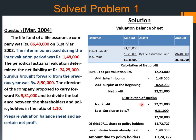Distribution of surplus: Net profit available is Rs 22,21,000. Less surplus to be carried forward to the next year — that is Rs 9,31,000. So the remaining profit is Rs 12,90,000. Out of this, 10 out of 11 share is due to policyholders as per the given ratio. So Rs 12,90,000 multiplied by 10/11 is Rs 11,72,727. Less interim bonus already paid — Rs 1,48,000. So the final balance amount due to policyholders is Rs 10,24,727.